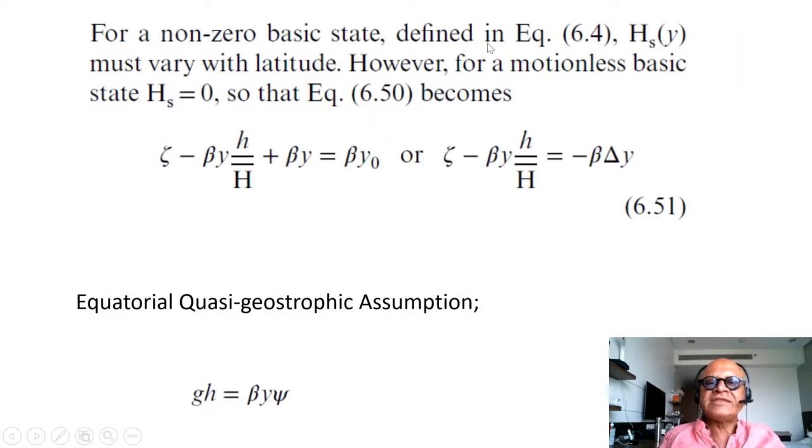For a non-zero basic state, h_s_y must vary with latitude. For motionless basic state, that is set to zero, so then the equation we looked at before just reduces to this form where we're going back to the turning latitude or the critical latitude. You can write that as zeta minus beta y times h over H equals minus beta delta y. That is the perturbation of the fluid column by a latitude delta y, which gives you this induced relative vorticity zeta. Beta terms are planetary vorticity terms and this is the relative vorticity term.